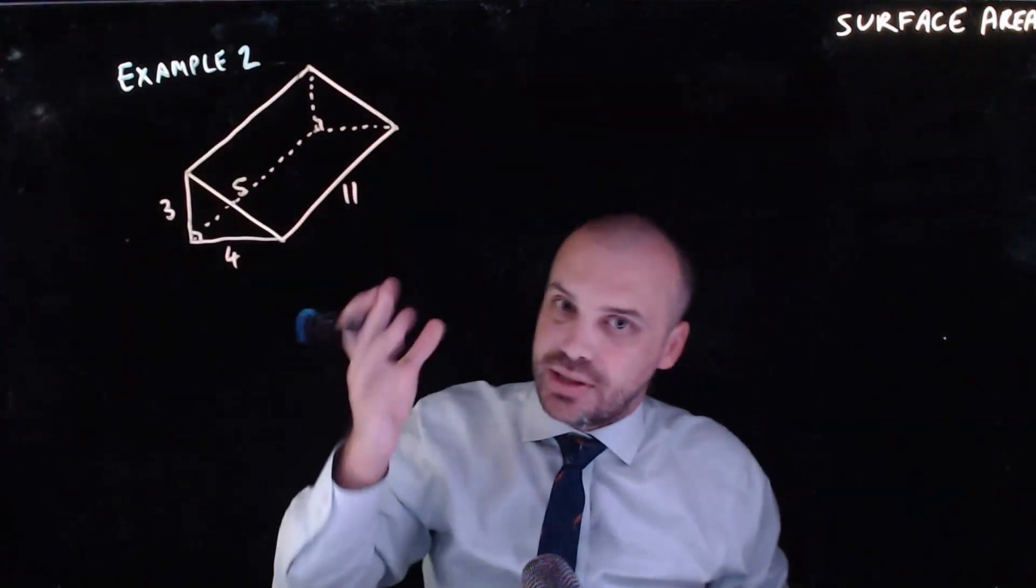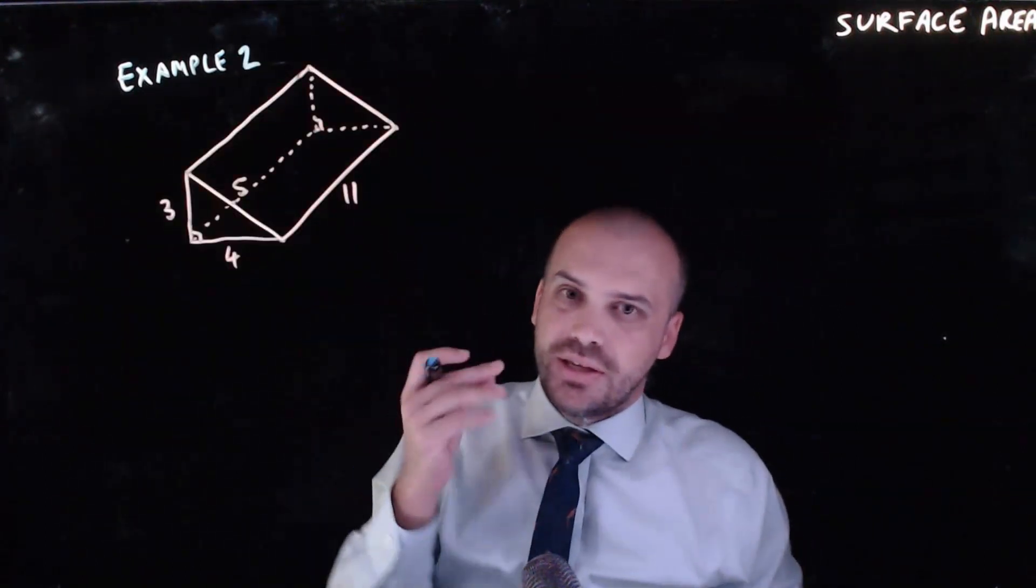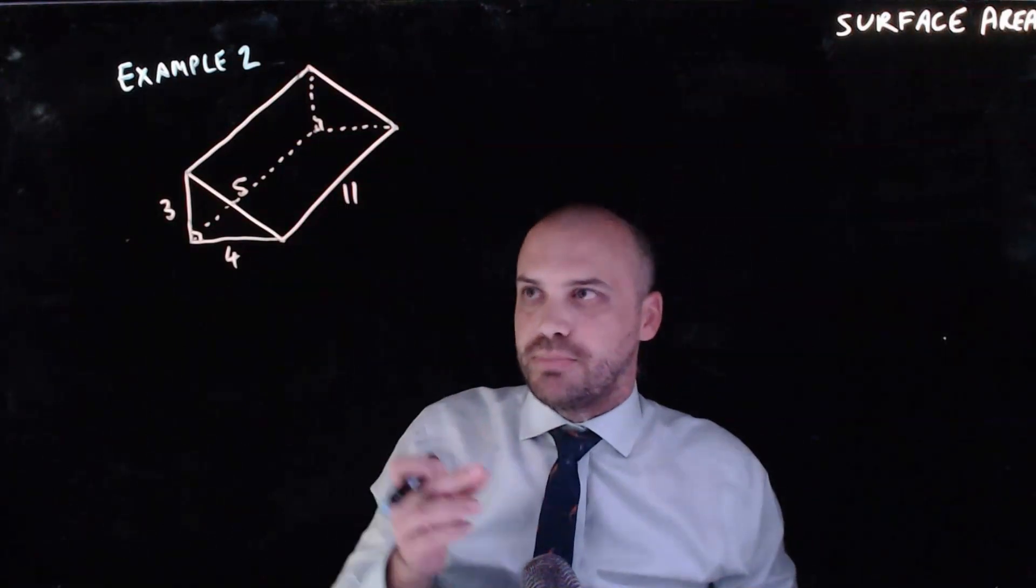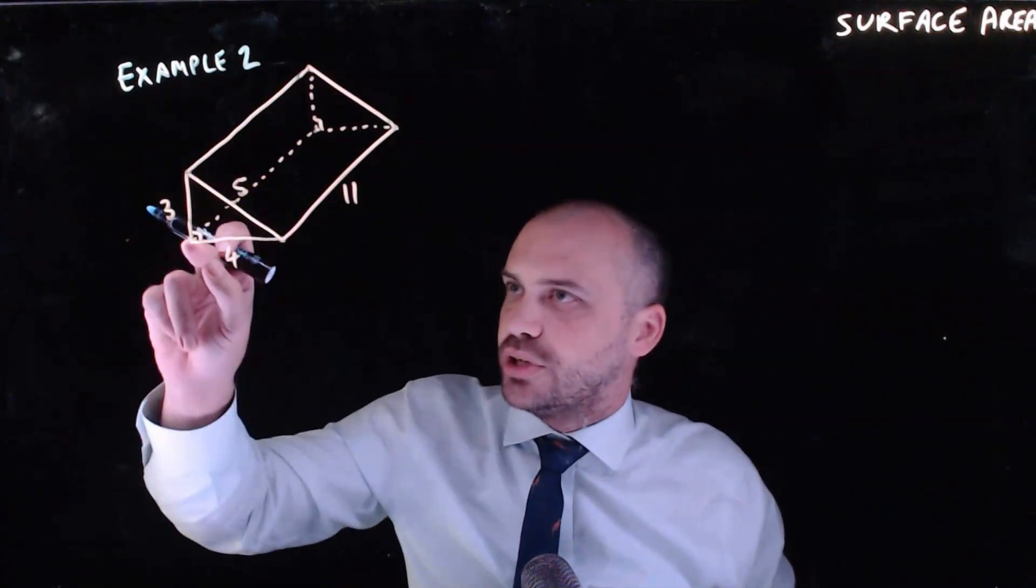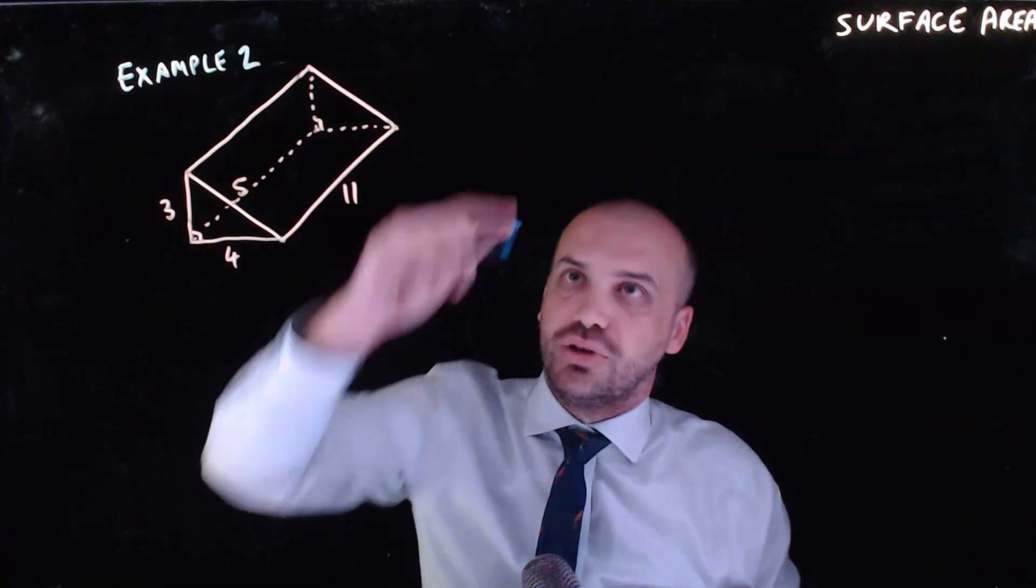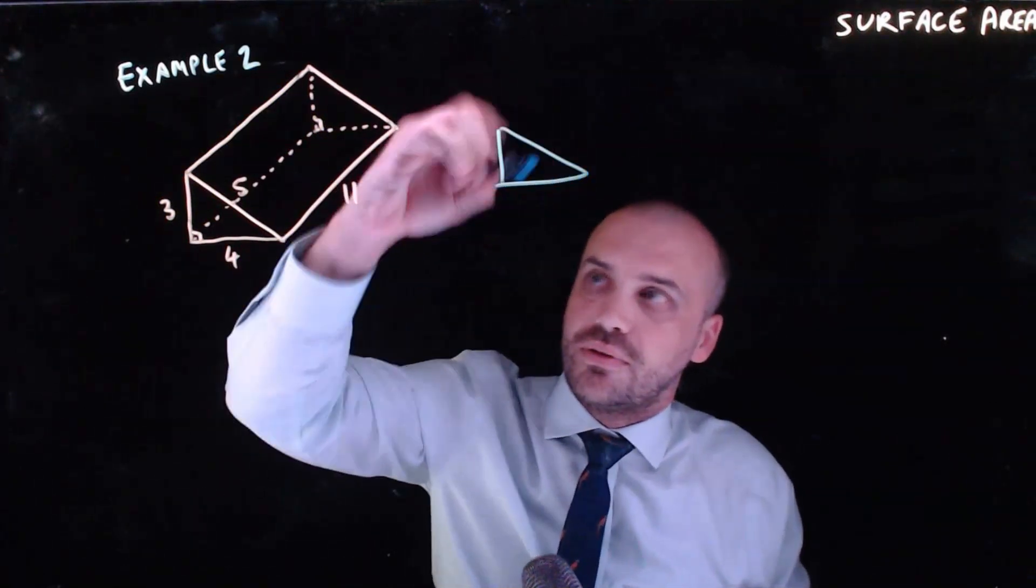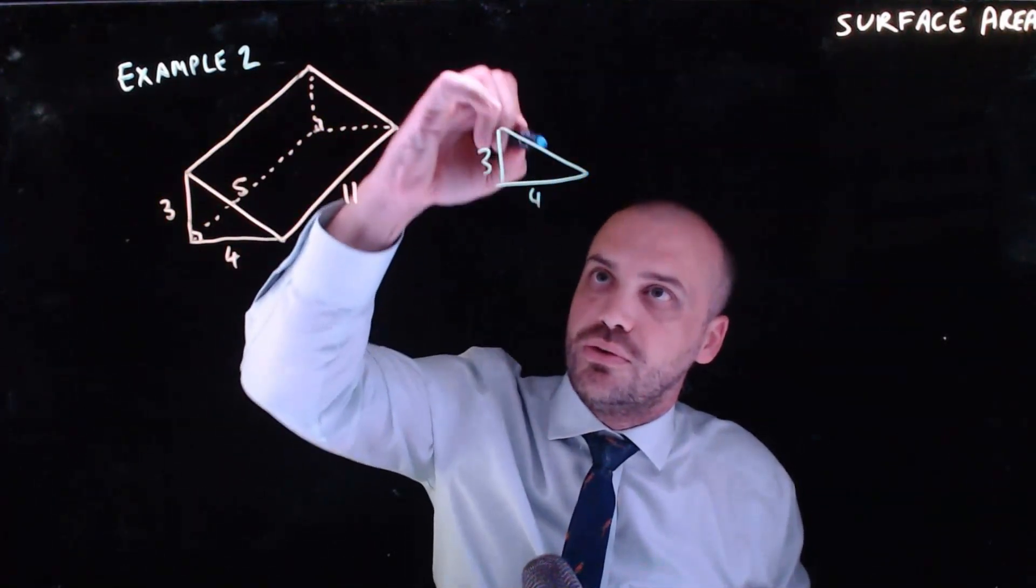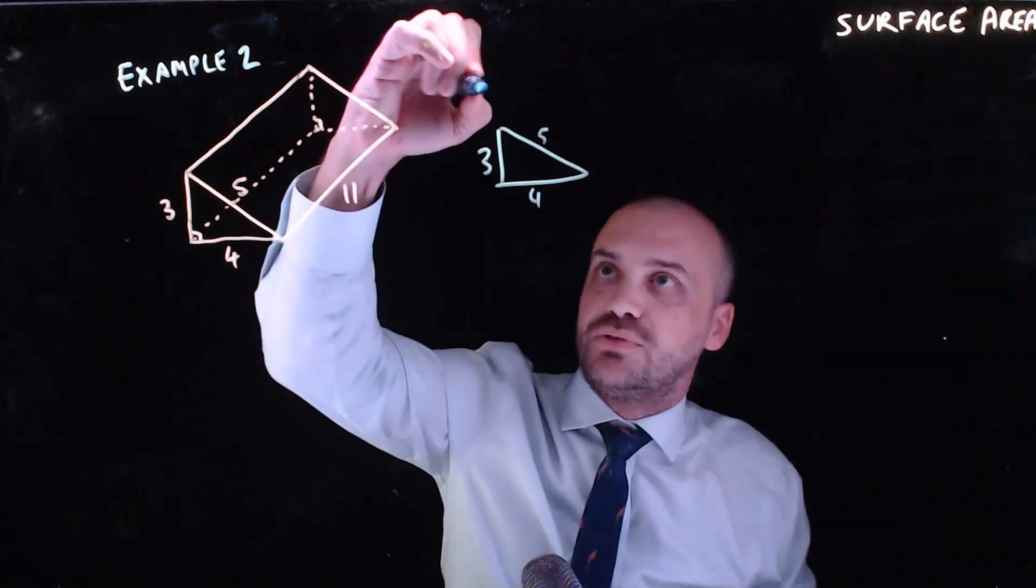Now we have a shape like this. There's no neat little formula for this. You need to break it up into its component parts. We have a right angle triangle here and the same right angle triangle here. So we're going to have 3, 4 and the 5 and we're going to have two of those.